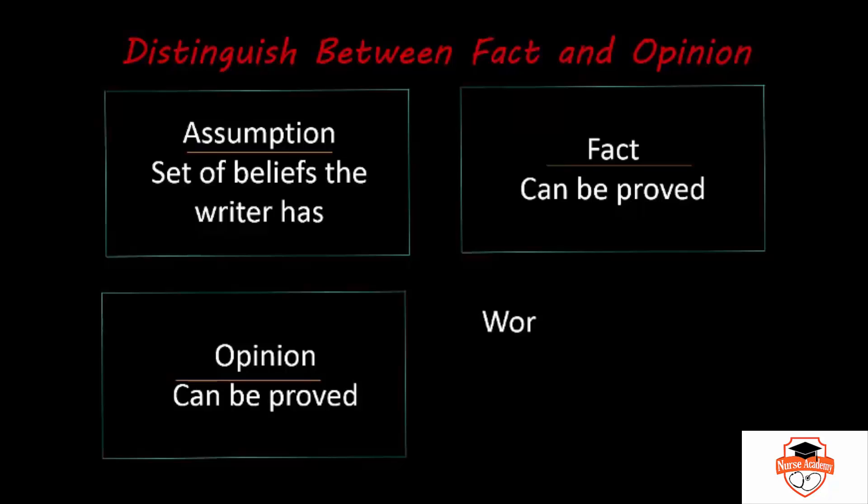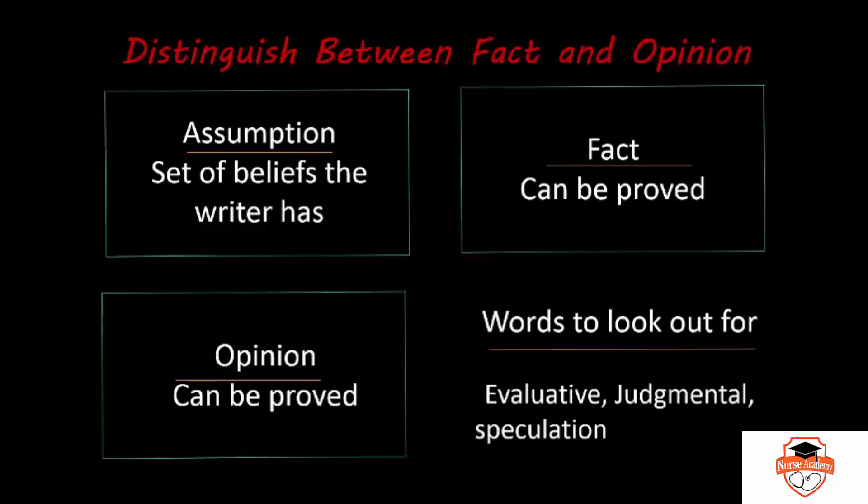When looking at opinions, there are a few words that I want you to look out for. The first type of word is an evaluative word. The other one is a judgmental. For example, if I said, I believe. Next, you want to look at speculation and probability that are used in future tense. These are four types of words that you want to look out for when you're dealing with an opinion.